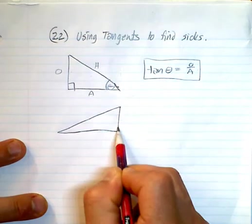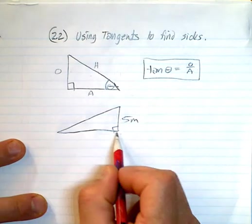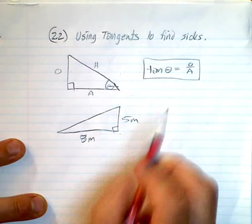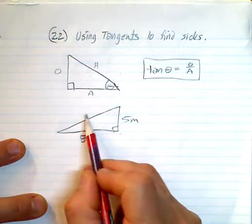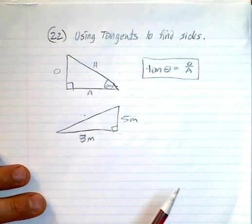Say you're given a height of 5 meters and say you are 8 meters away from the base here. If you wanted to find this side here, you could do Pythagorean theorem: a squared plus b squared equals c squared.